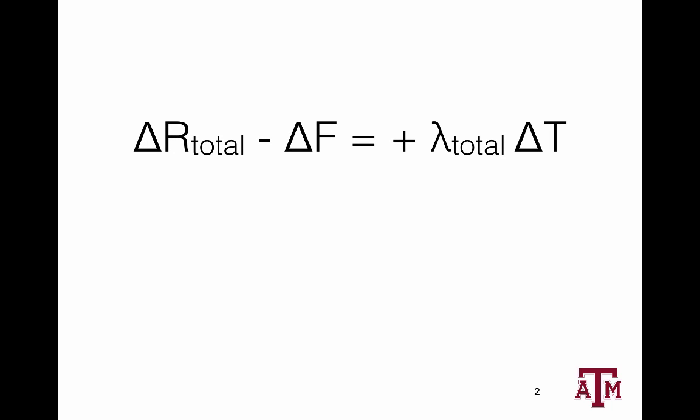Let's begin. The most naive thing you can do is take an equation that looks like this: we measure top-of-atmosphere flux from CERES, and temperature we can get from MERRA, and forcing is basically small over the CERES period — it's not correlated with surface temperature, so it doesn't really matter. And you can regress that, and the slope gives you lambda total.